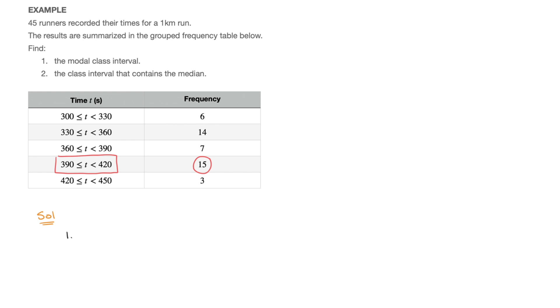And so I'll just go ahead and write modal class interval: 390 to 420. And in fact, I'll go ahead and box that result. There we go. That's the modal class interval. Next, question 2.